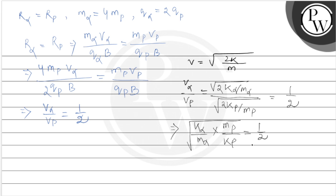We will square both sides. First of all, m_alpha is equal to 4m_p. We will get k_alpha/k_p × m_p/(4m_p), so we will get 1/4. This cancels. k_alpha/k_p is equal to 1. That means k_alpha is equal to k_p.